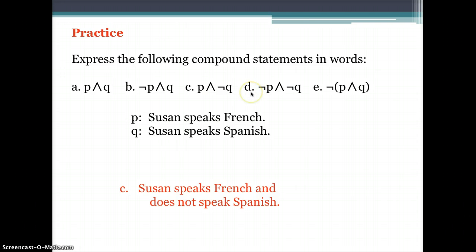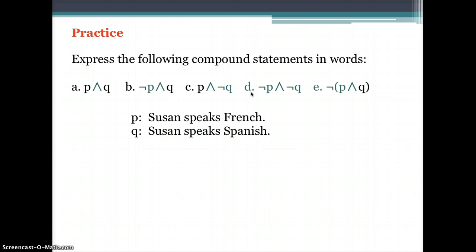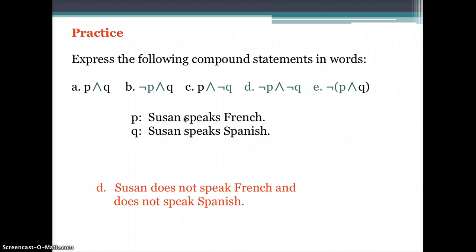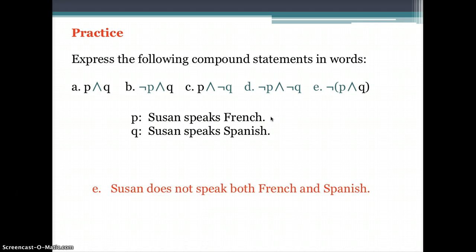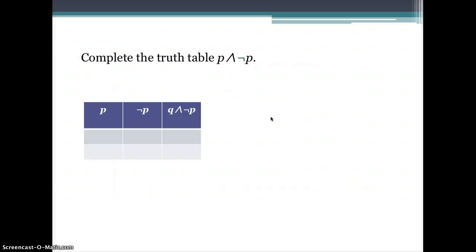For letter D, not-P and not-Q means we negate both propositions, giving us: Susan does not speak French and does not speak Spanish. For letter E, we negate P and Q together, so: Susan does not speak both French and Spanish.